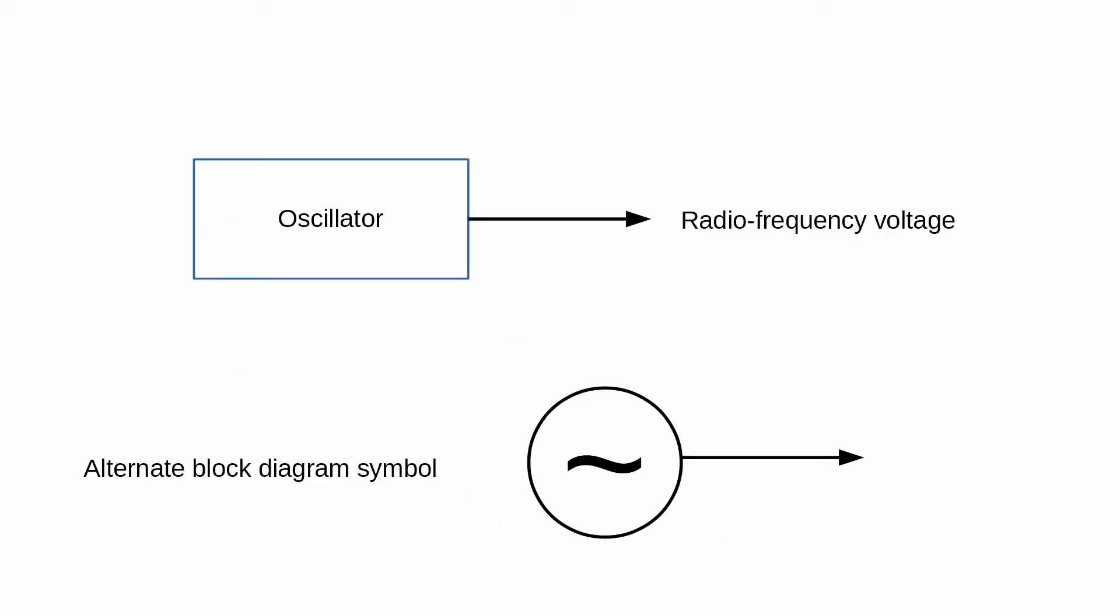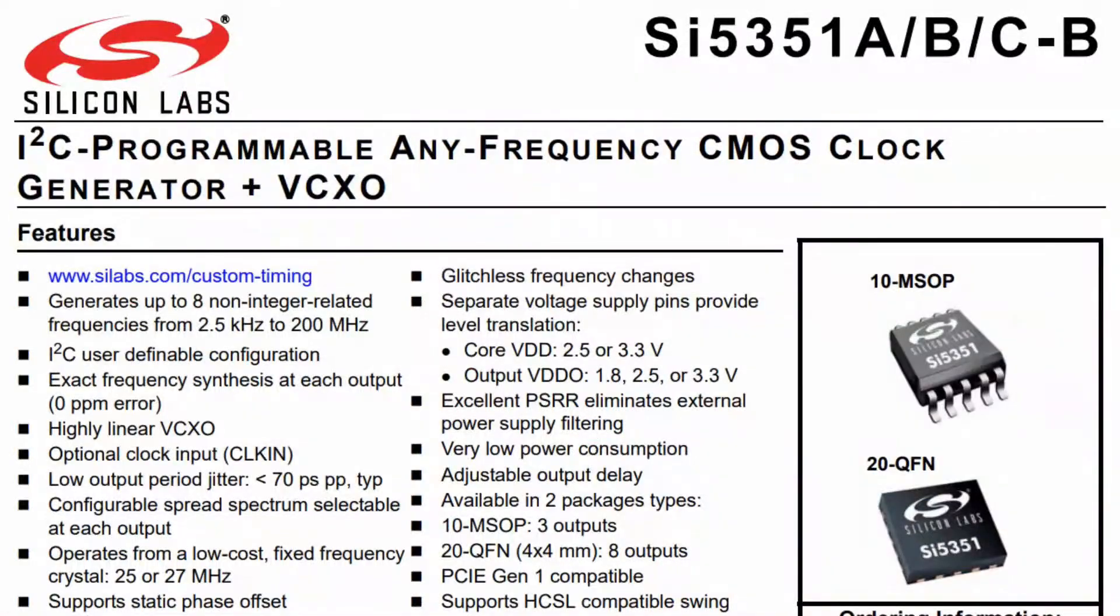The first important block is the oscillator. That's the name of the function that puts out a steady sine wave-like continuous radio wave at a single frequency. It used to be that good oscillators required lots of components and careful temperature control. Nowadays, you can get several oscillators on a single chip.